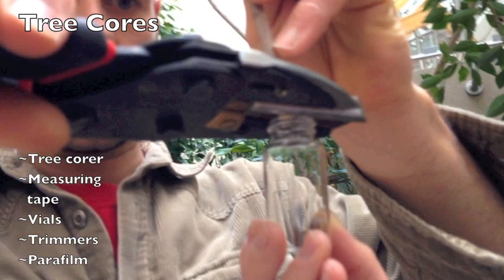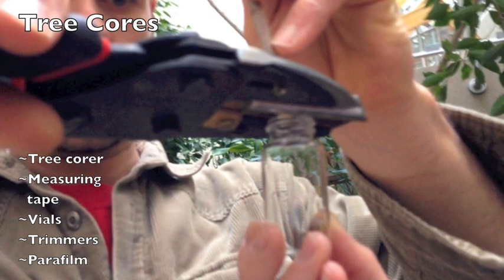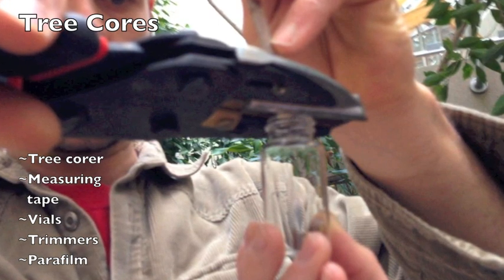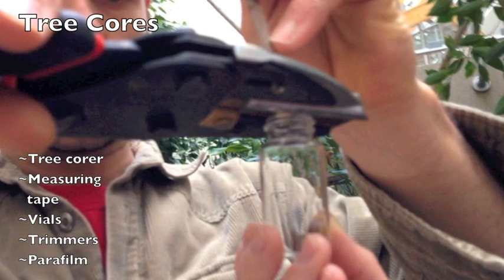Using a handheld trimmer, snip the core into small disks directly into your sample vial. Trimming the sample into small disks increases their surface area and allows for better water extraction. Cap the sample immediately and parafilm as soon as possible.